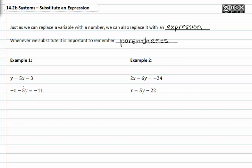In example one, we say that y is equal to five x minus three. Since it's already been solved for y, we can take this value and plug it in for y in the second equation to get everything in terms of x.